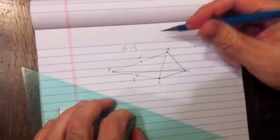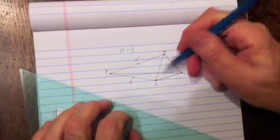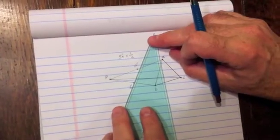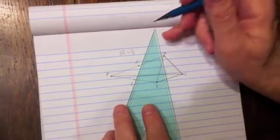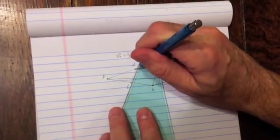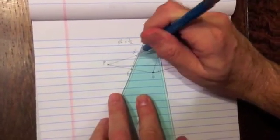Now A prime to B prime will be parallel to AB. So I'm just going to draw that. They may not be exactly parallel, but at least you know they should be parallel. So I'll draw that. And I'm a little bit off, but that's okay.